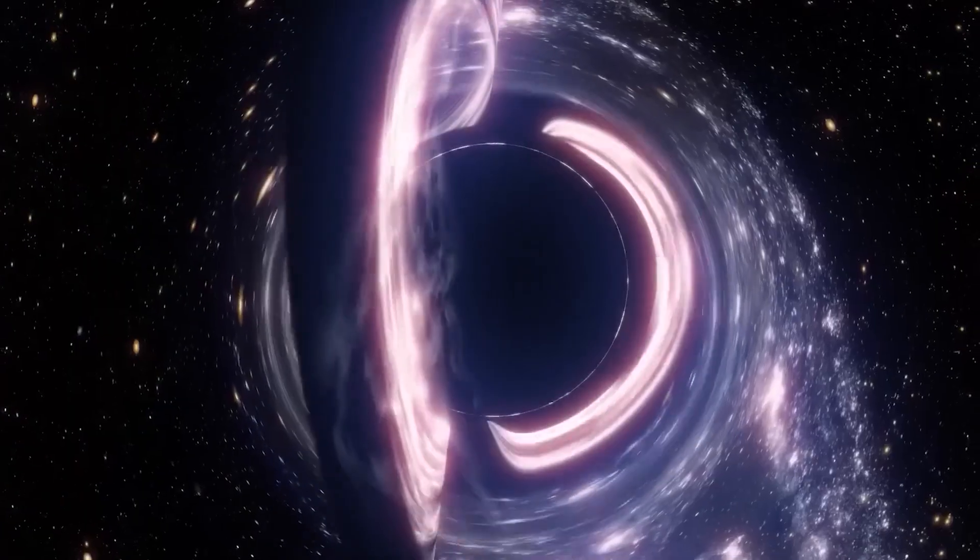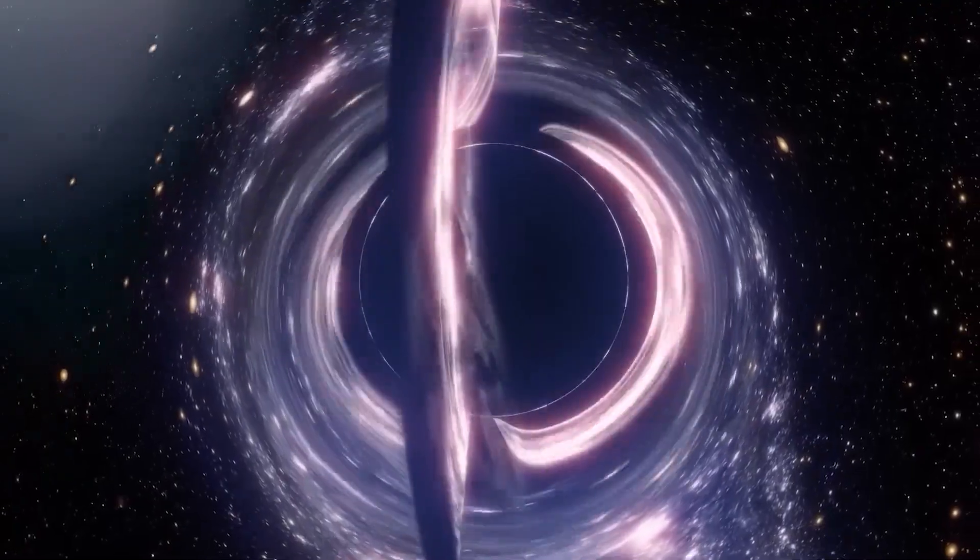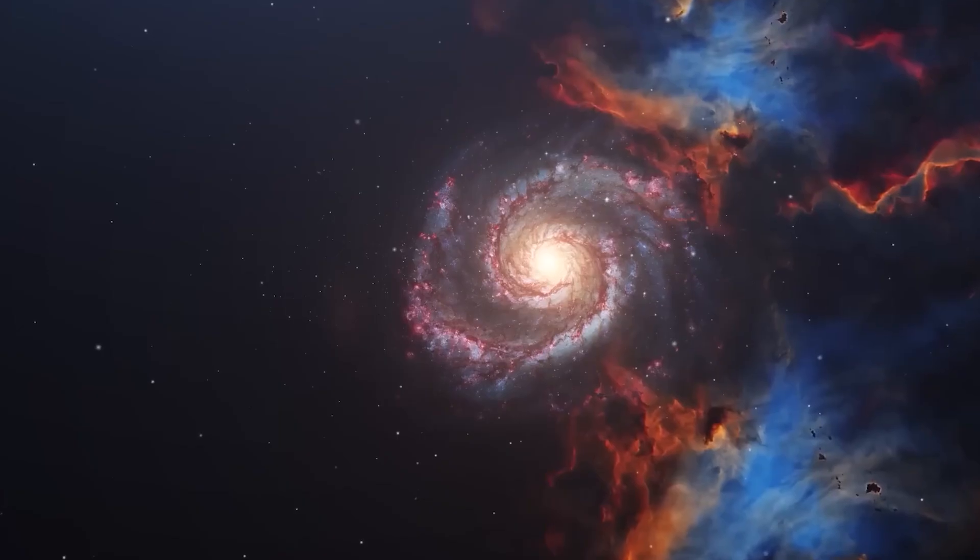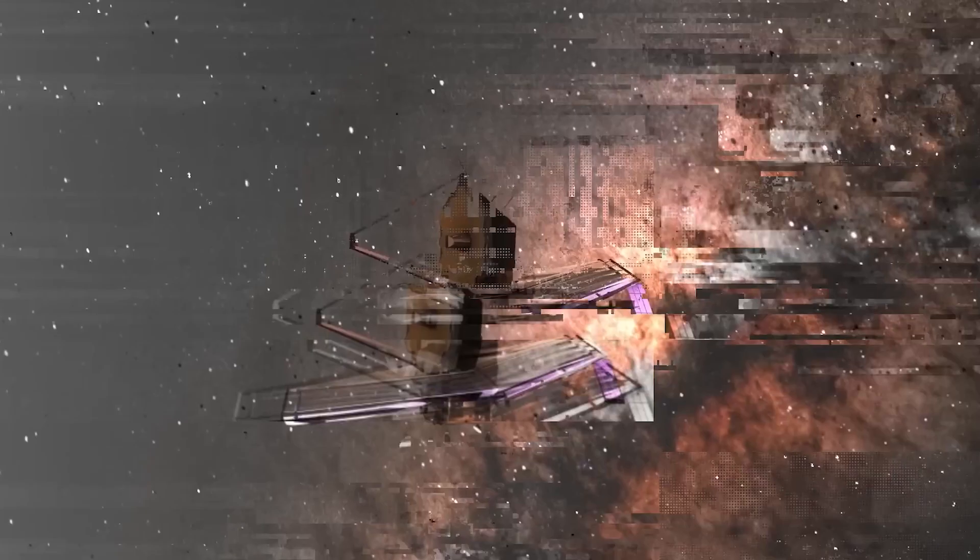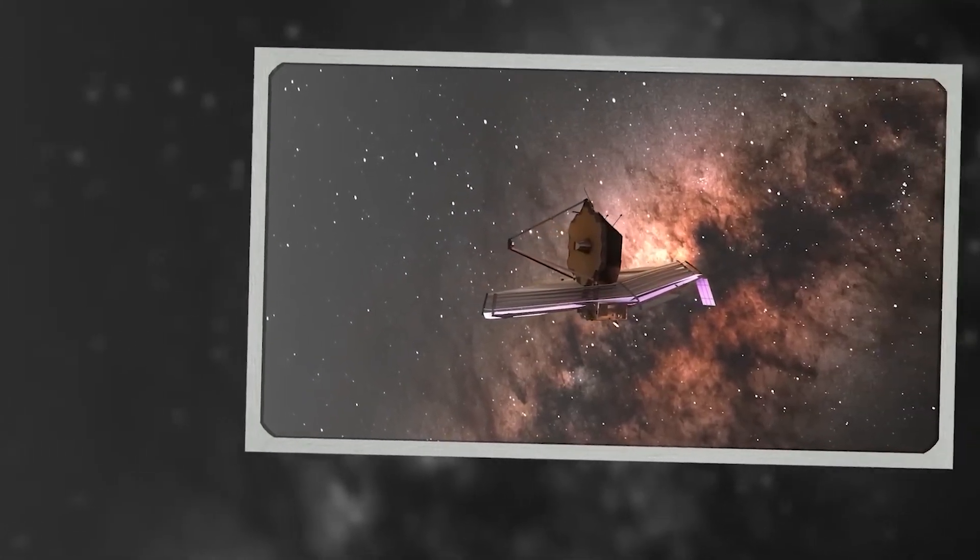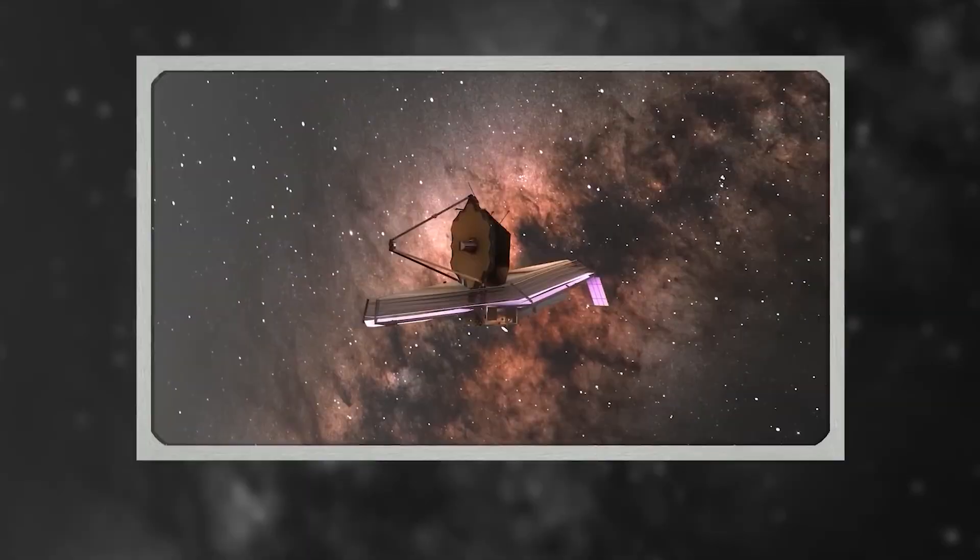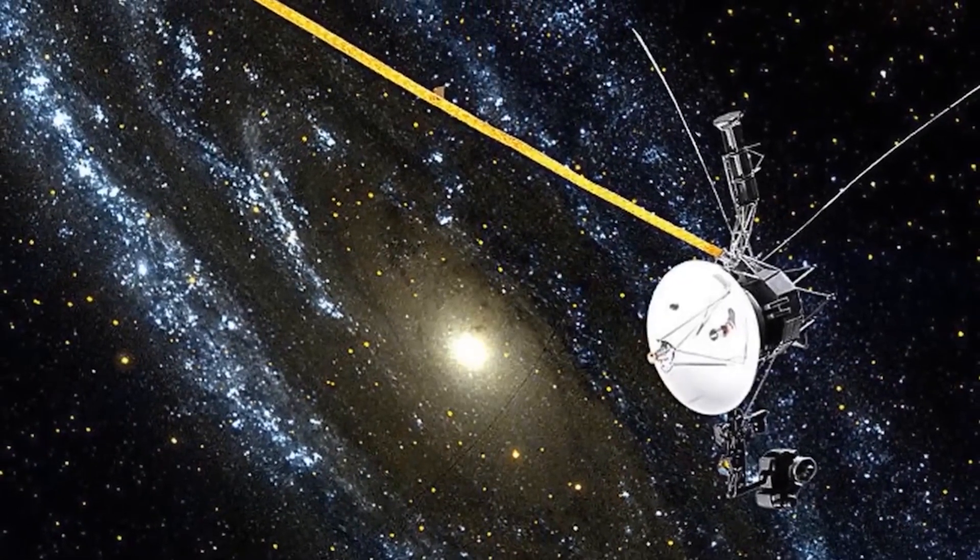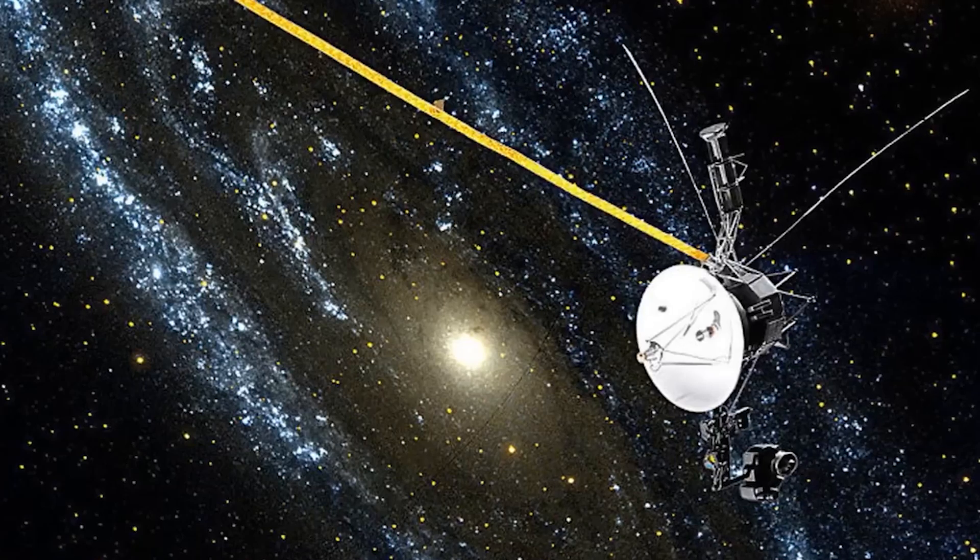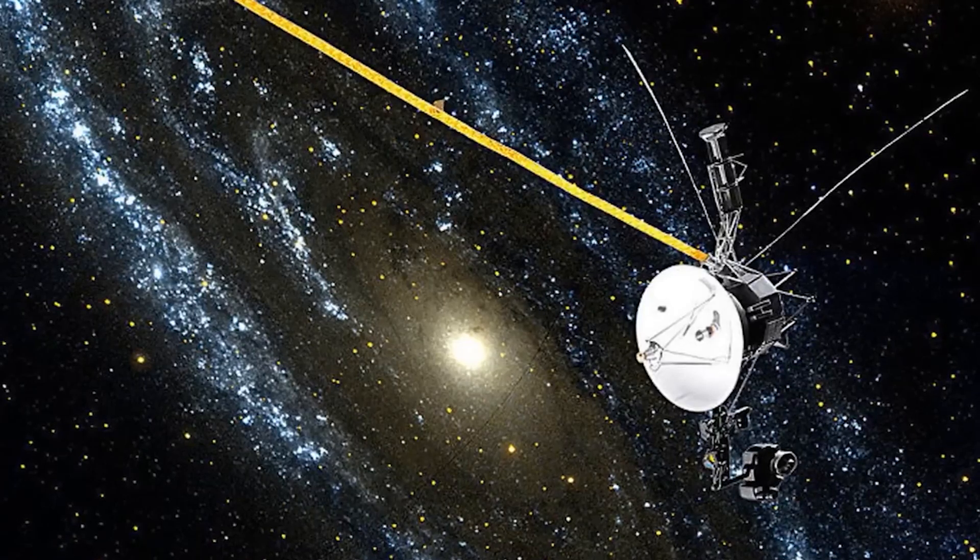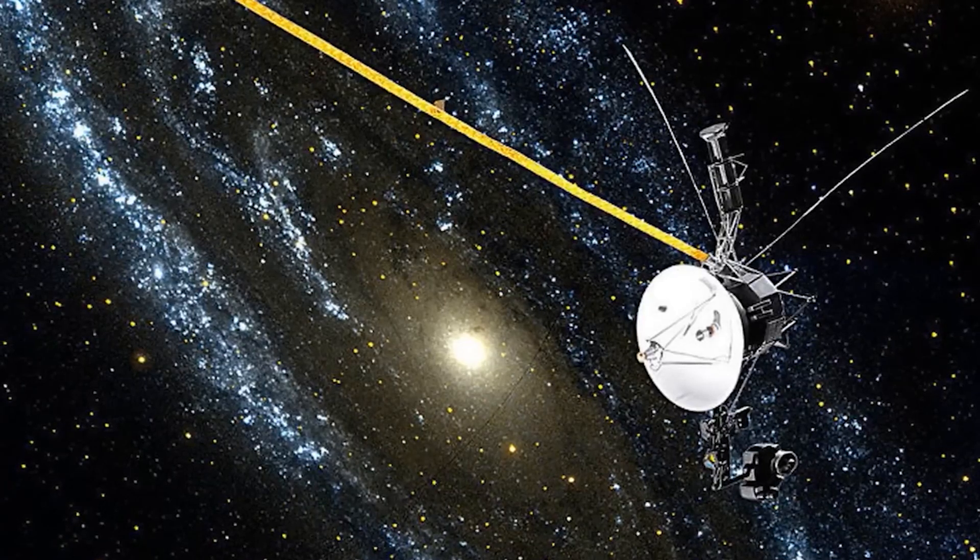But what it found there shattered that assumption. In the quietest part of the cosmos, the telescope detected a shadow that wasn't casting light nor reflecting it. It was devouring it. And then something even stranger happened. That darkness moved slowly, deliberately, as if it knew we were watching. What the telescope recorded next forced a team of astrophysicists, cosmologists,